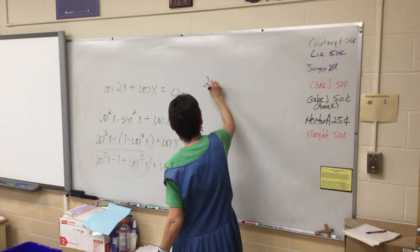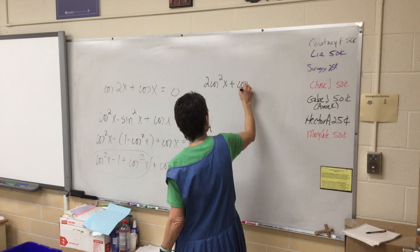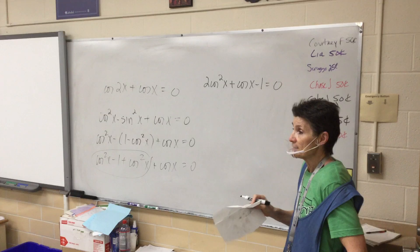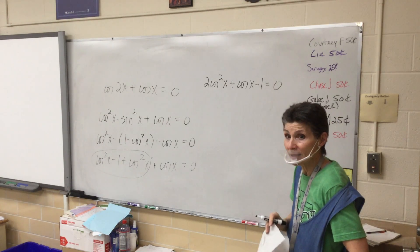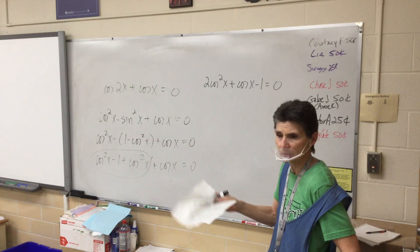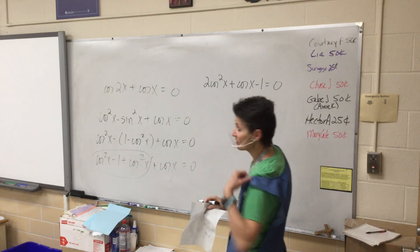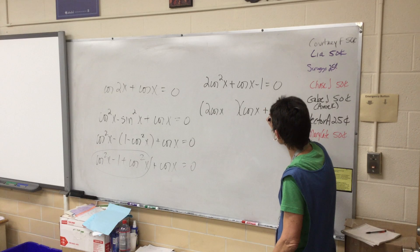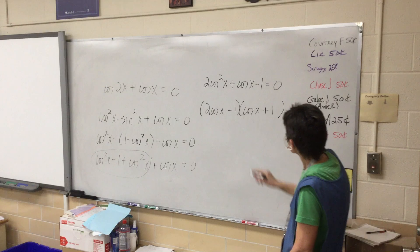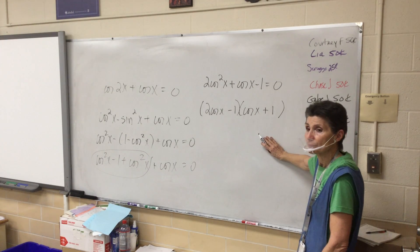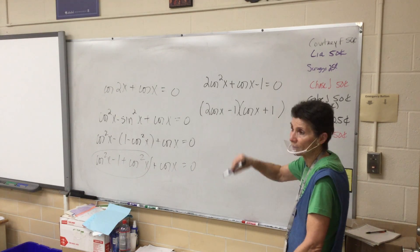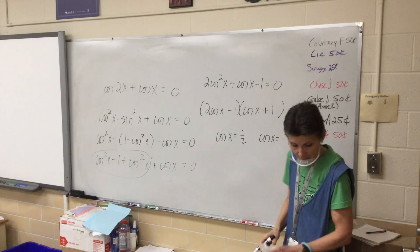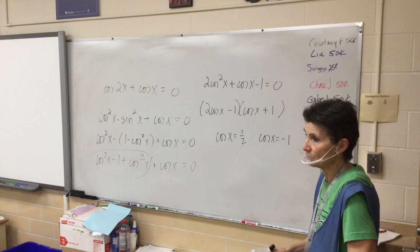So what have I got now in my equation? I've got 2 cosine squared plus cosine minus 1. Now this is right back where we were a minute ago. The difference is that factors. Could you use the quadratic formula if you were comfortable with what we did a minute ago? Absolutely. But this one does factor. So when I factor it, this will be plus 1, minus 1. Double check it.